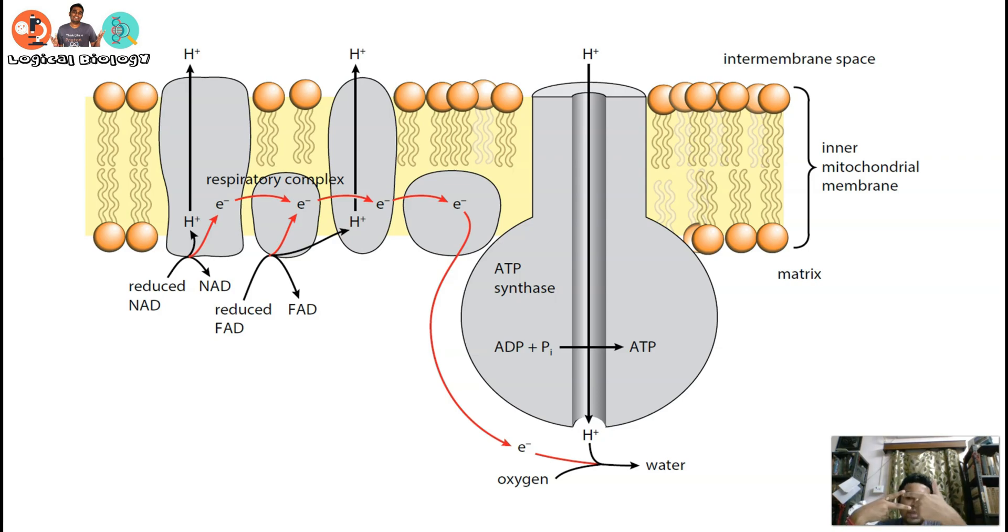Mitochondria is a double membrane structure, so the space between two membranes is known as intermembrane space. Just like you have inter-house activities in school - activities conducted between houses. Be very careful about the choice of words you are making while attempting an answer.